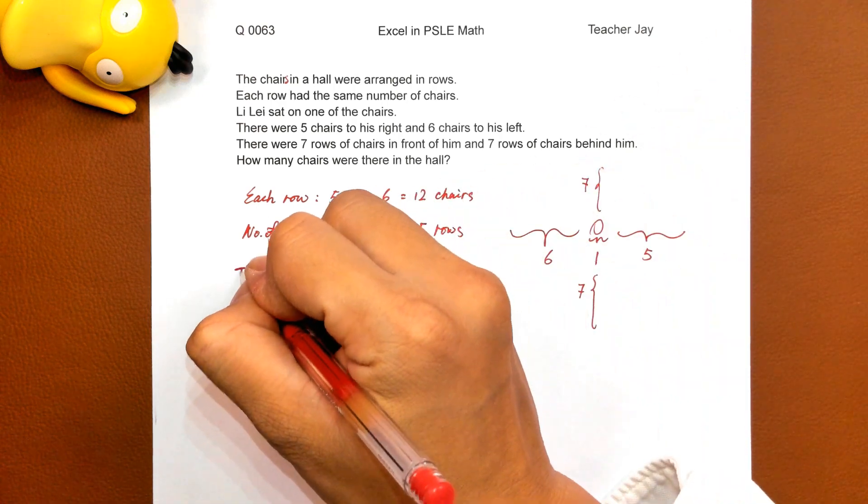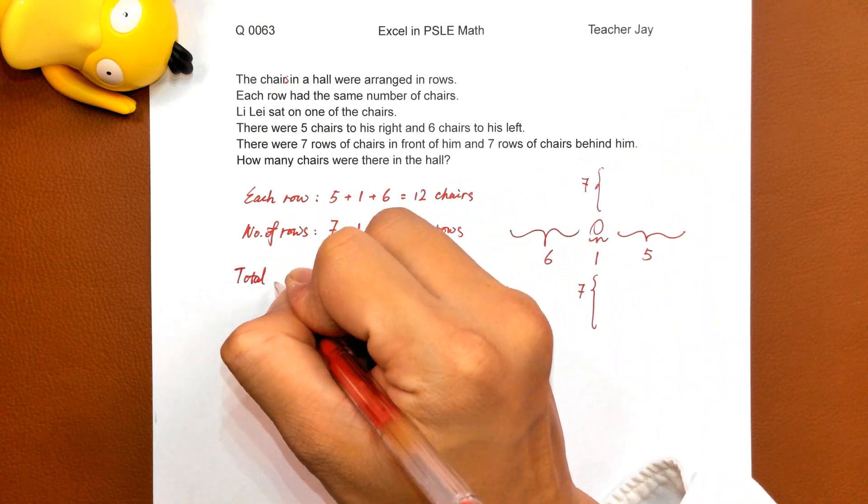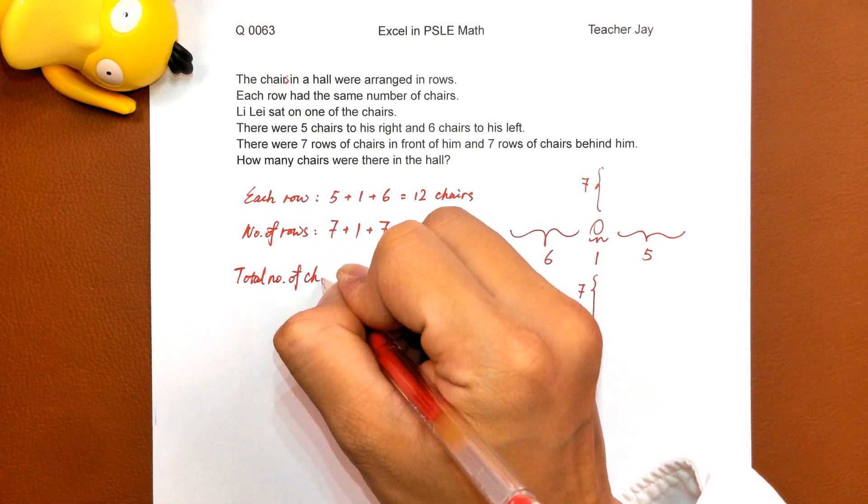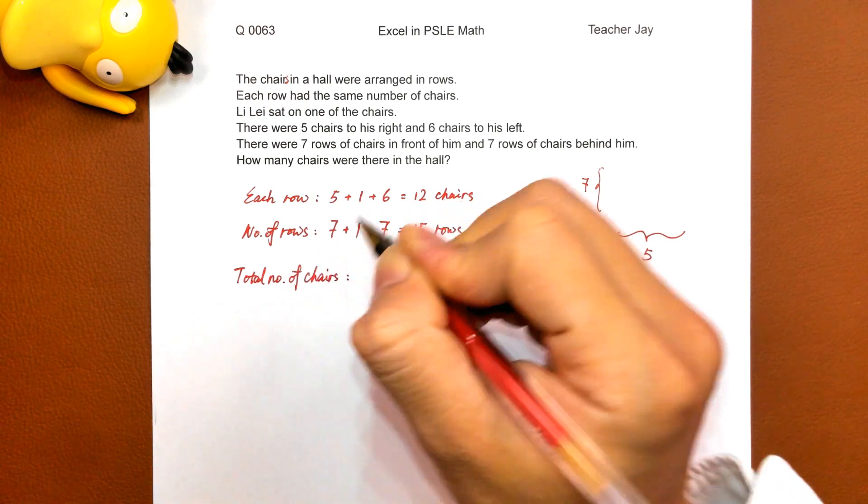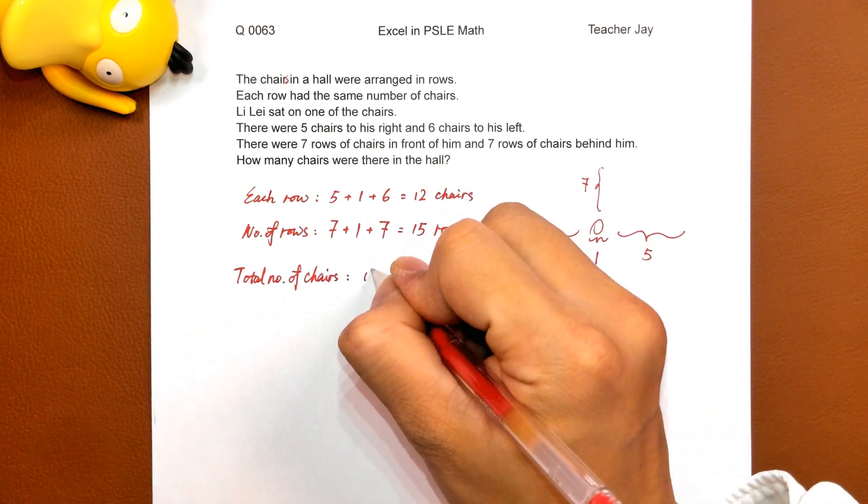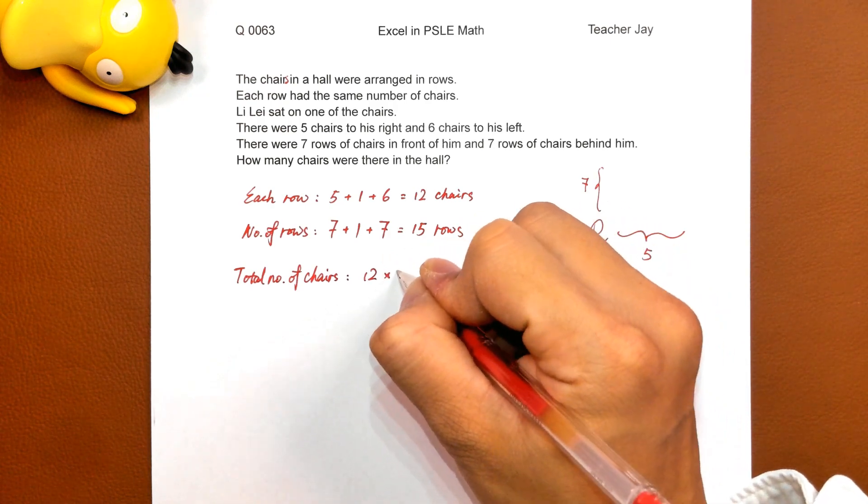Hence, total number of chairs: twelve per row times fifteen.